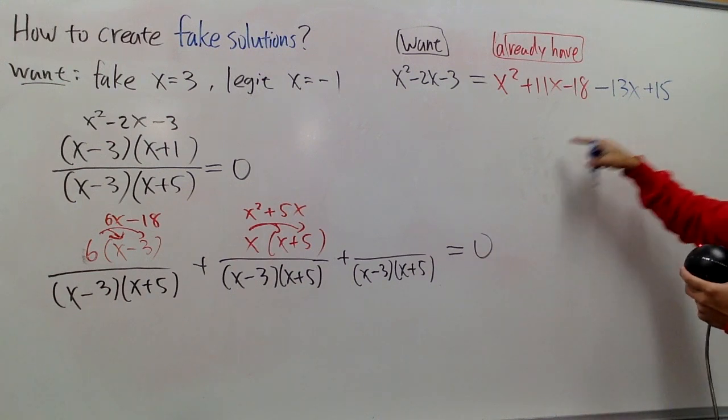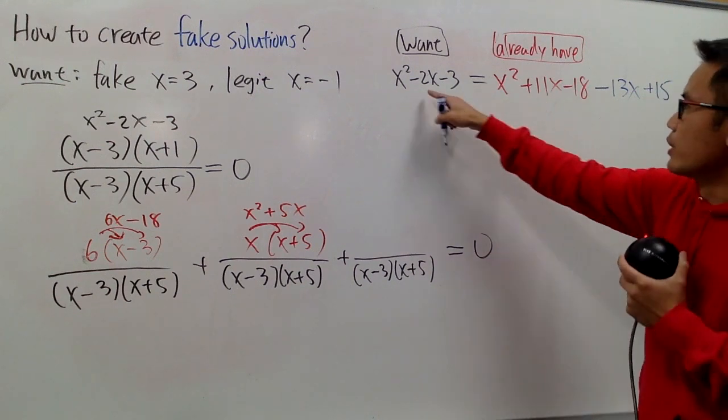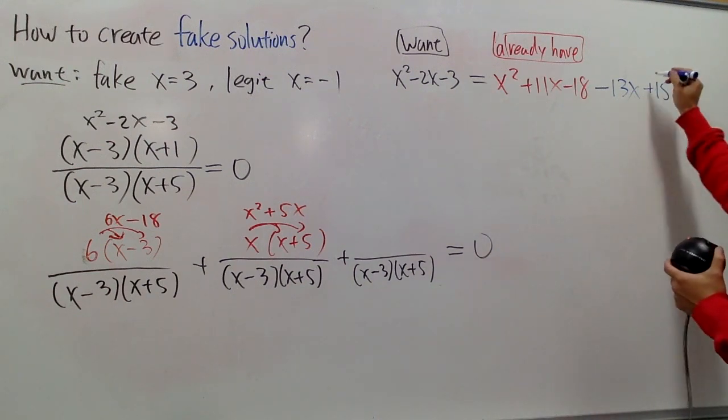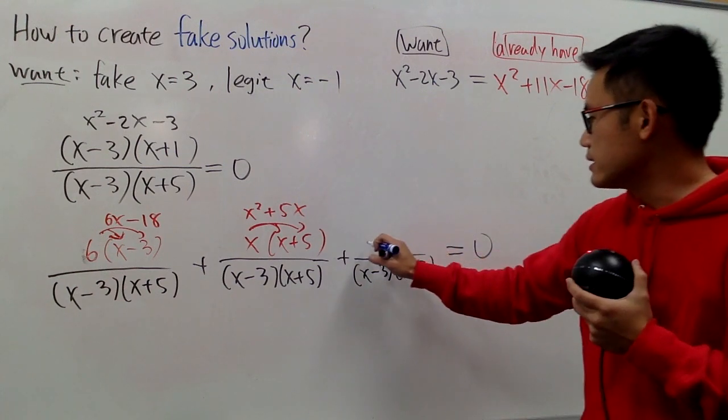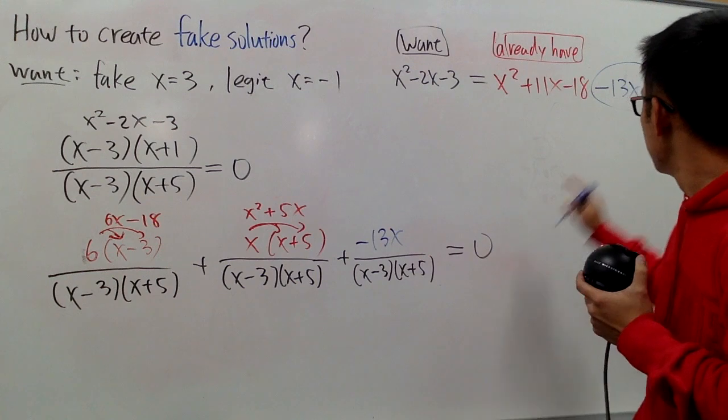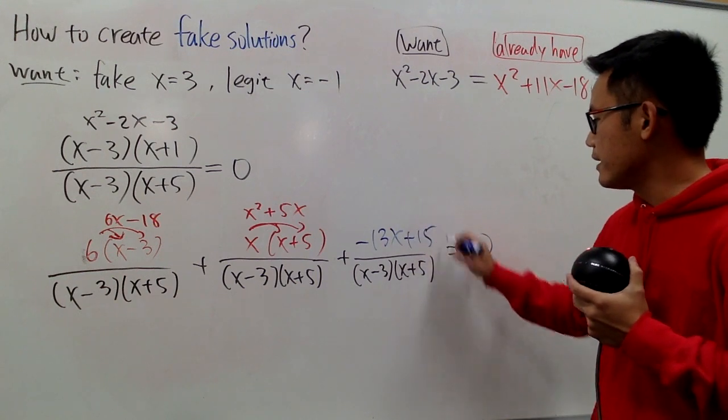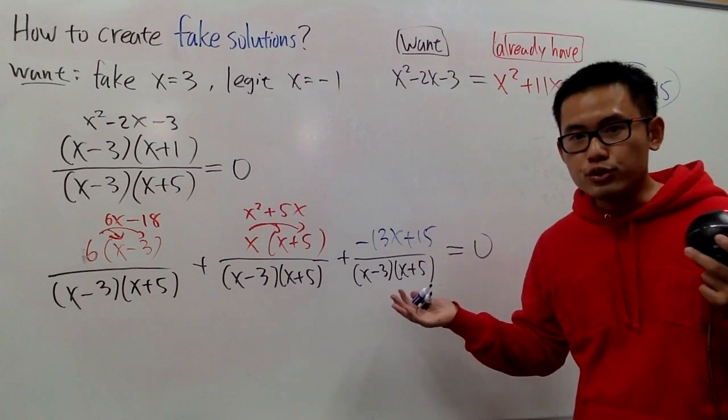And likewise, this and that together will give us that. Now, this right here is what we are going to put down right here. So this is negative 13x plus 15. And this is pretty much the creation.